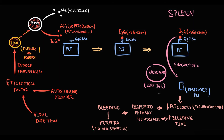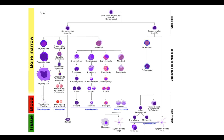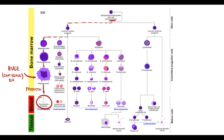In response to decreasing platelet count, bone marrow begins to produce more platelets. On bone marrow biopsy, we can see hyperproliferation of megakaryocytes. Platelets are produced from stem cells differentiated into myeloid progenitor cells and then into megakaryocytes. Megakaryocytes are huge cells that cannot leave the bone marrow, but they produce platelets. To increase platelet count in peripheral circulation, the bone marrow increases the amount of megakaryocytes.